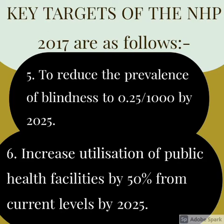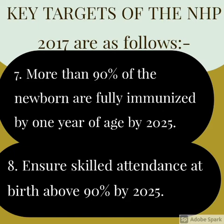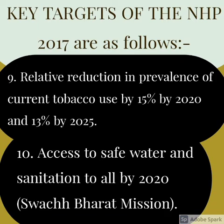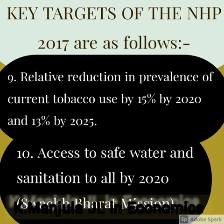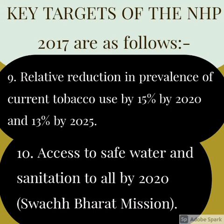Fourth, reduction of infant mortality rate to 28 by 2019. Fifth, reduce the prevalence of blindness to 0.25 per thousand by 2025. Sixth, increased utilization of public health facilities by 50% from current levels by 2025. Seventh, more than 90% of newborns are fully immunized by one year of age by 2025.